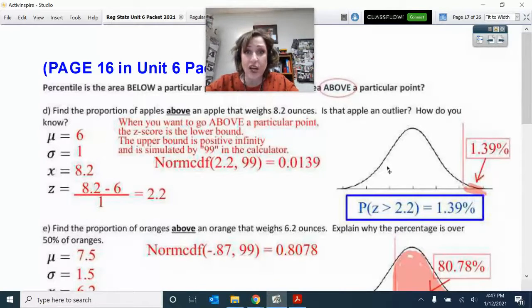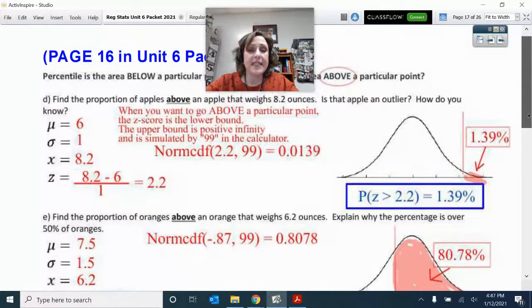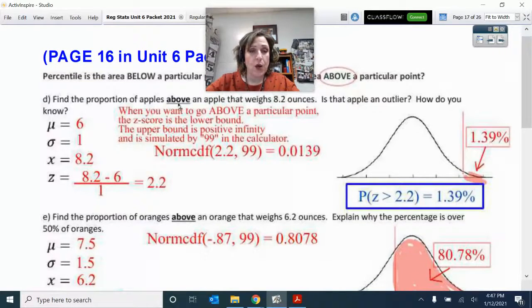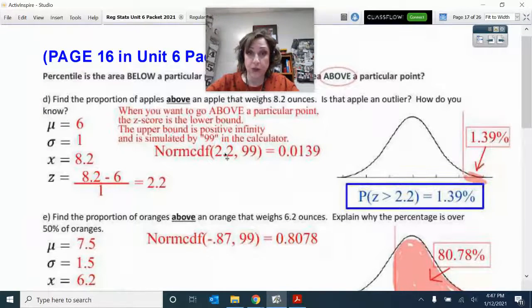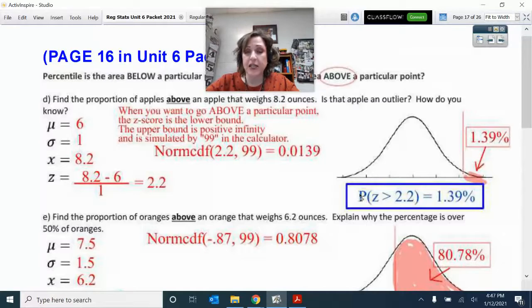What I did not do was explain how to do this probability notation. Look at this area I have in blue. Since this is a problem where I want to find the area above a particular place, above a Z score of 2.2, look at this notation: capital P, then parentheses, Z is greater than 2.2.